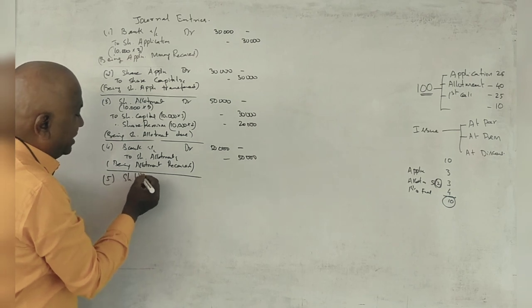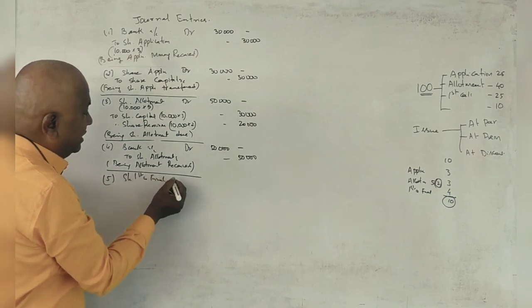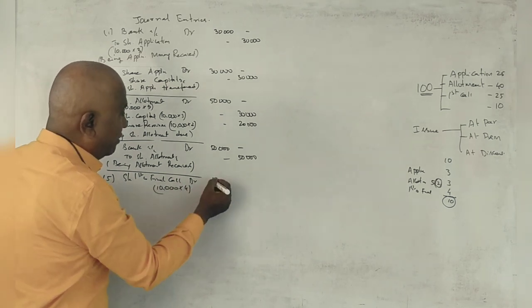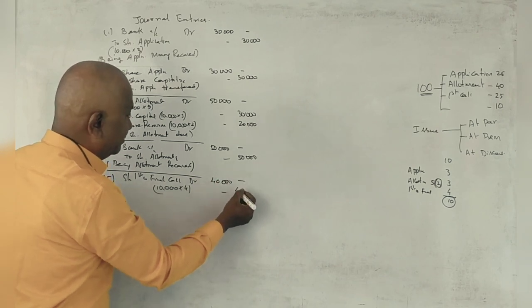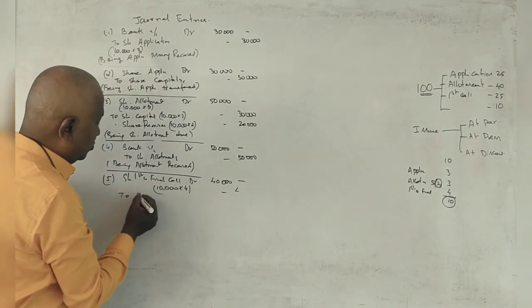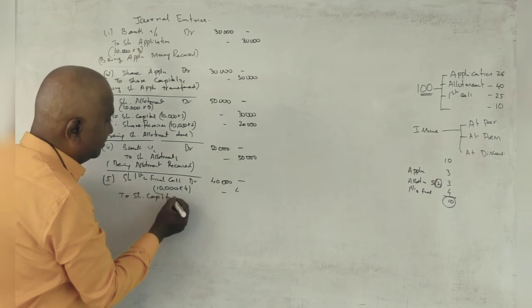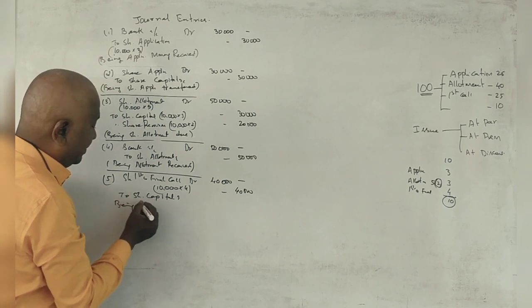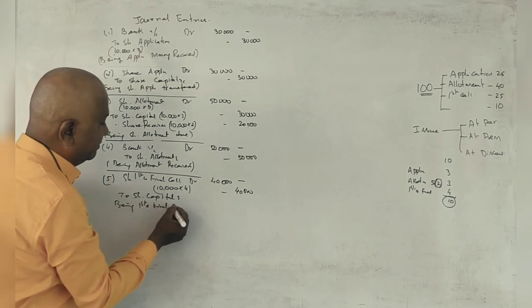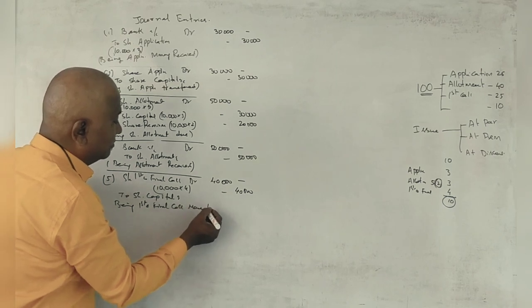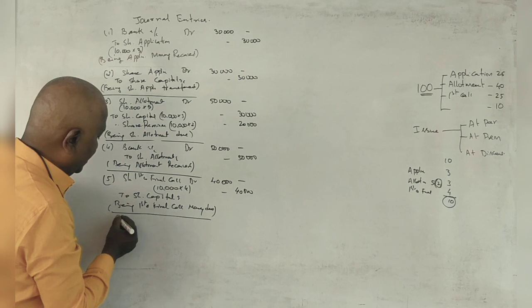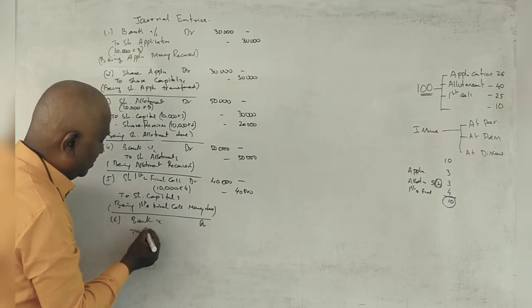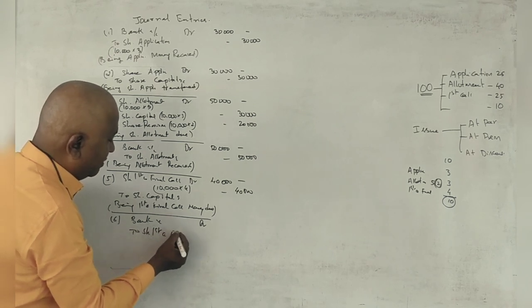Next is share first and final call account debit, 10,000 into Rs. 4, Rs. 40,000 to share capital account Rs. 40,000. To share capital account Rs. 40,000.